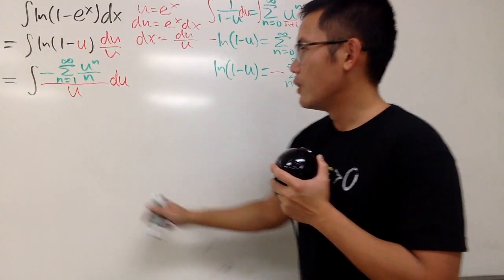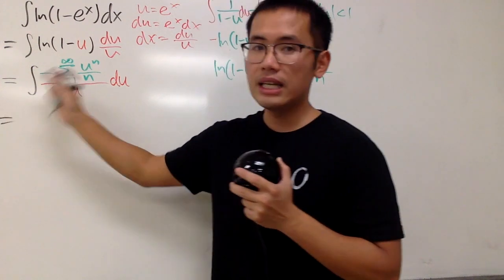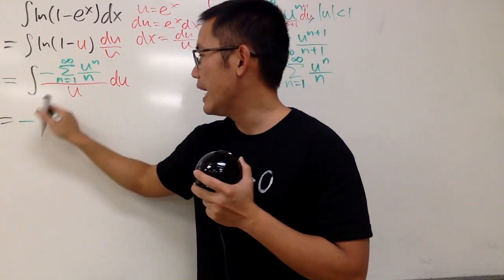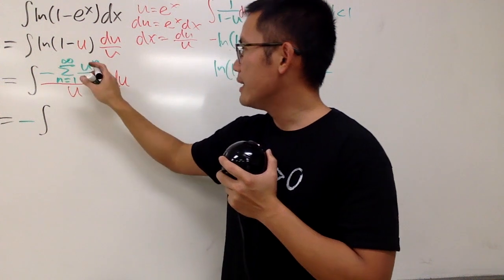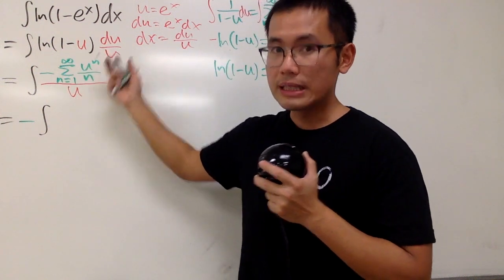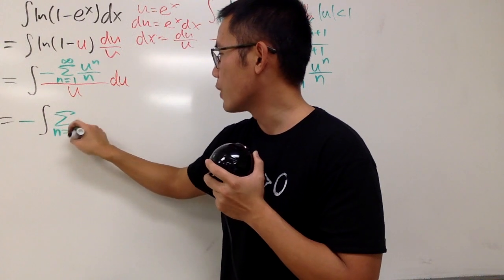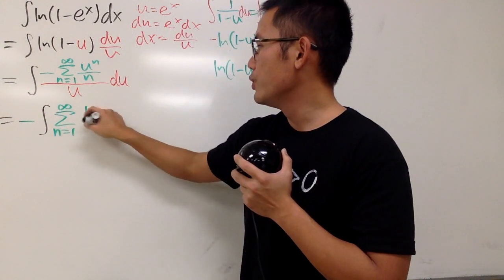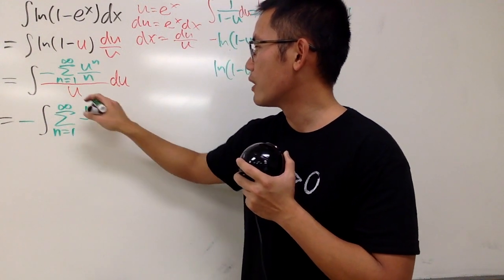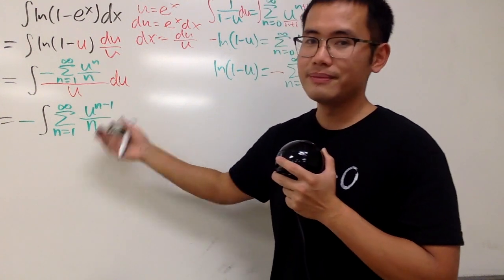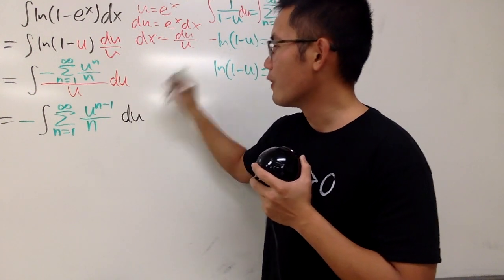Very nice. Okay. Then, you see that we can put the negative on the outside. That's good. And we have the integral. And this over that, we can just subtract the powers. So, inside here, we have the sum as n goes from 1 to infinity, u to the n minus 1 over n, like this. And we are still in the u world.